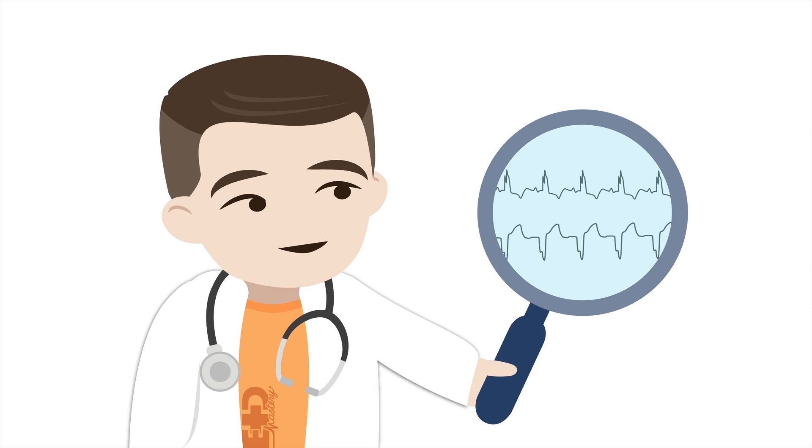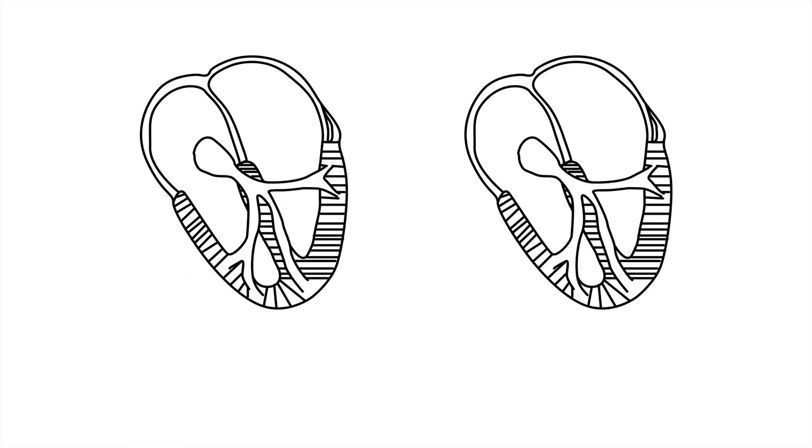So here are two types of broad complex tachycardias. In the first one, a pathologic focus somewhere in the atria has started to fire at a very fast rate, overdriving the sinus rate. It travels to the ventricles, but finds one of the bundle branches blocked. So we'll see a bundle branch block pattern. This is called atrial tachycardia with aberrant conduction.